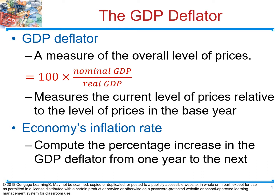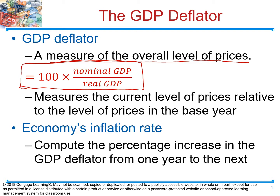GDP deflator is going to measure the overall level of prices in our economy. In order to calculate GDP deflator we're going to use the following formula: we take nominal GDP divided by real GDP and multiply by 100. GDP deflator is an index — it's not going to have any units like percentage signs or dollar signs attached to it.